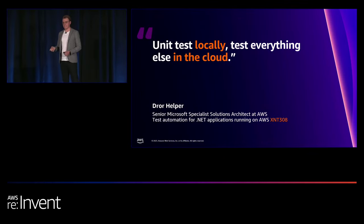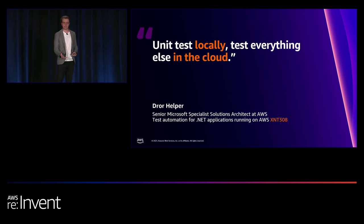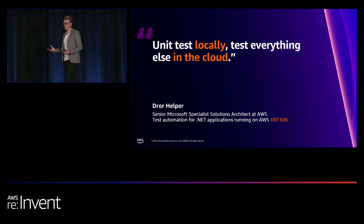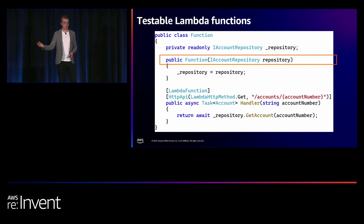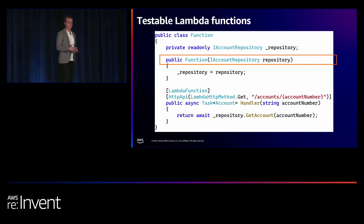The common mantra with serverless is to unit test locally and test everything else against actual cloud resources. Write a small number of unit tests to test core business functionality, and for more robust tests, push them out to actual cloud resources. If you're using .NET and Lambda with the Annotations Framework, make sure you're writing functions in a testable way. Annotations allows this because you're using dependency injection — you can inject a mock implementation of an interface like IAccountRepository for unit tests, then push to the cloud and run integration tests against actual cloud resources.